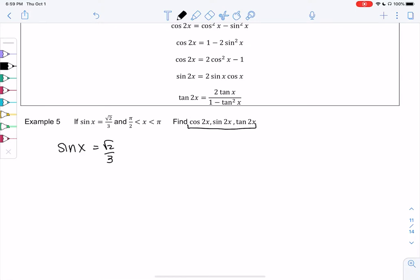sine of 2x, and tangent of 2x. So this would be like knowing sine of 30, but we want sine of 60.